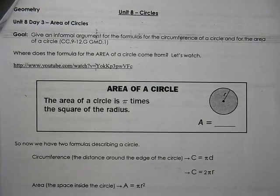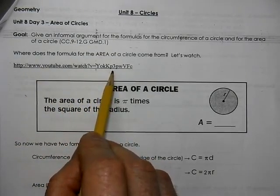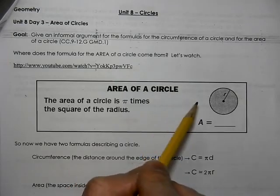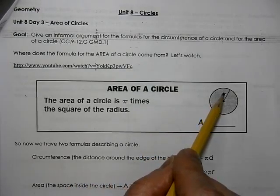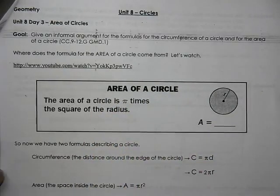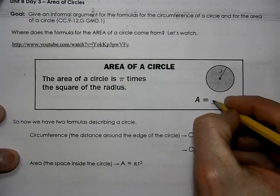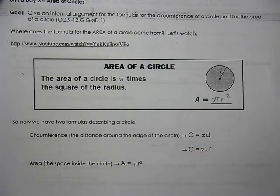This is unit 8, day 3. We're working on the areas of circles. There's a great YouTube video that talks about how the area of a circle is calculated and where it comes from. We learned that pi r squared, you've used that formula for many years.